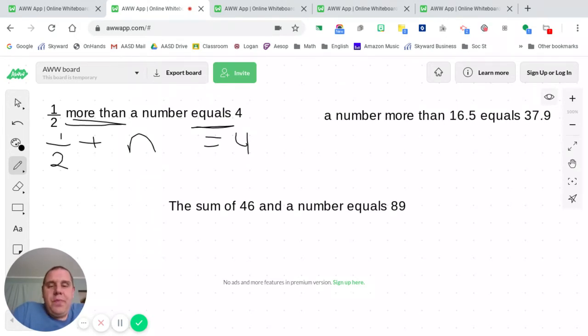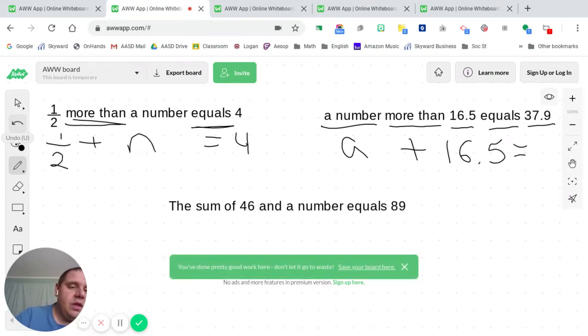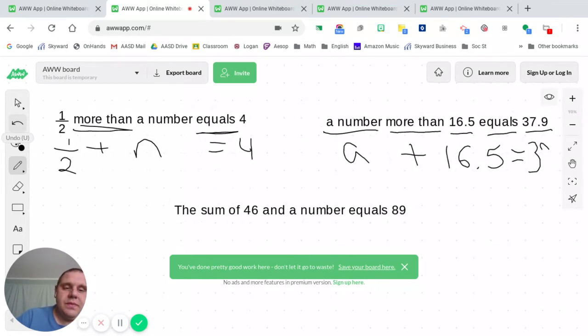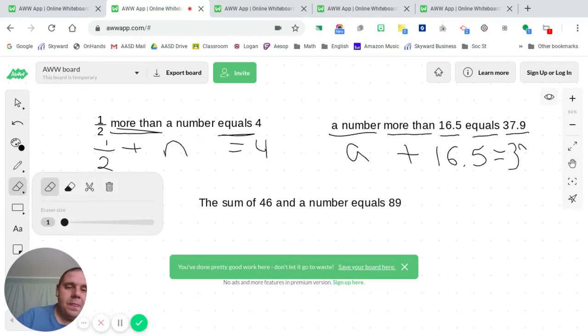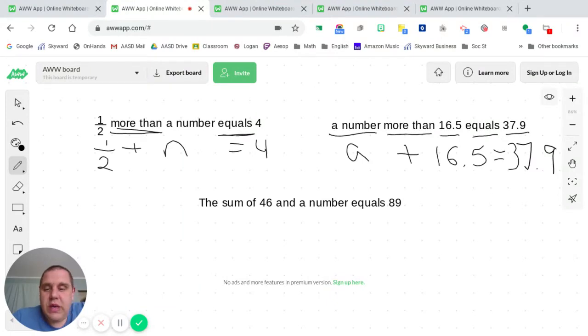Let's jump over to our next example. A number more than 16.5 equals 37.9. We've got a number more than 16.5 equals 37.9. You can see that I kind of chunked those things. So a number, any number, it doesn't matter. So you put in a variable, a. More than means add. Let me rewrite that. 16.5 equals 37.9. I'm going to run out of space here. There we go, 37.9. A plus 16.5 equals 37.9.